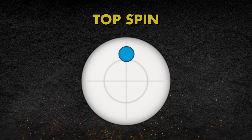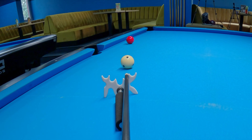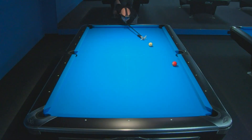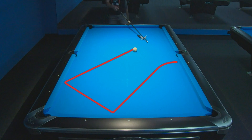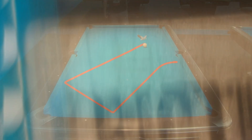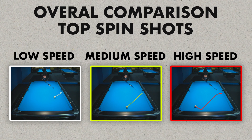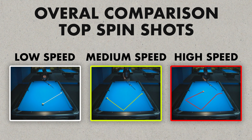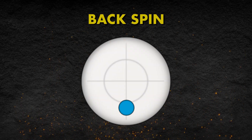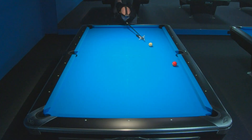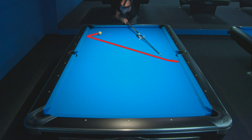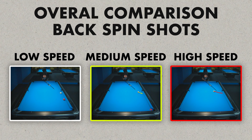With top spin at high speed, the cue ball bounces from the rail with a lot of power, and the amount of top spin grabs the cloth more, resulting in a very visible curve at the beginning. Comparing all top spin shots, as much speed as we use, the bigger the curve the cue ball makes. With low spin at high speed, the cue ball again initially curves, but comparing all three shots with this spin, the only visible difference is in the distance traveled.